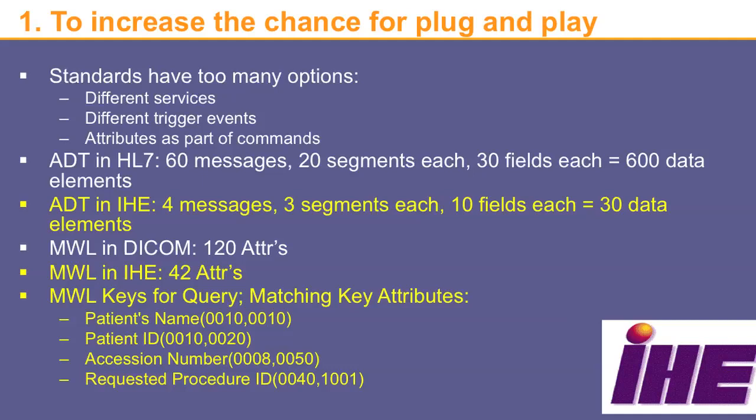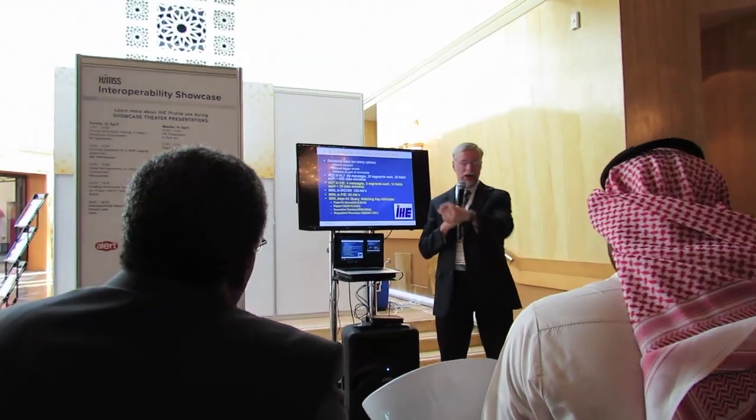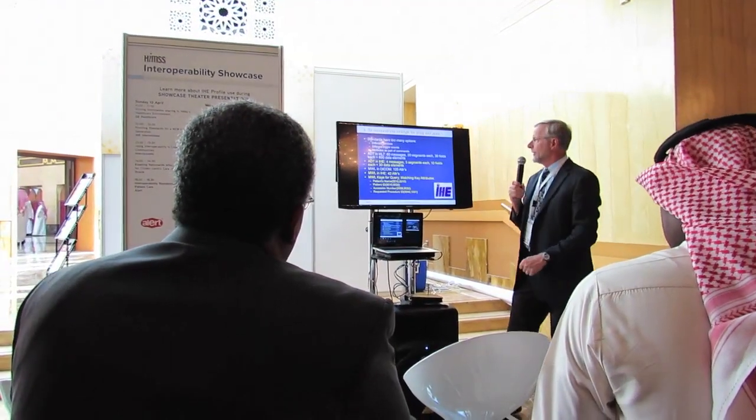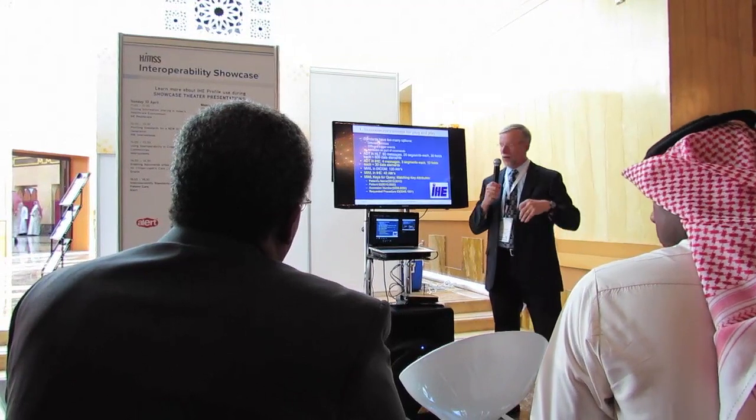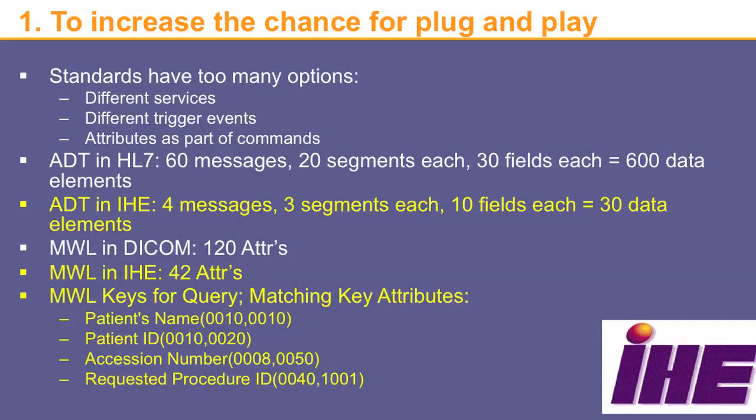For example, the ADT message in the HL7 standard — ADT stands for Admission, Discharge, and Transfer — has 60 different messages. Each message has 20 segments, and each segment can have about 30 fields. So if we add it all up, we see that using this ADT, we could do it in 600 different ways using 600 different data elements. You can imagine that the chance for interoperability is not that big, because if one device supports data elements 509, 510, 511, and the other device only listens to 403, 405, 406, we don't communicate.